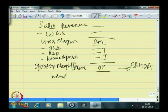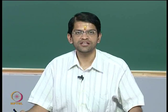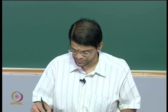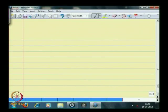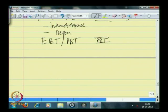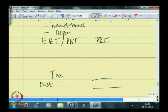After EBITDA you will have your interest expense. Depreciation — which is the cost of using the asset — is an expense, and the extent to which the asset is depreciated is the depreciation expense; that is the charge of using the asset during this period. EBITDA minus interest and depreciation gives your earnings before tax, also called profit before tax. After you pay your tax, what remains is your net income, sometimes called profit after tax.